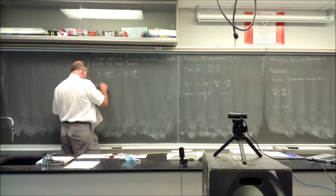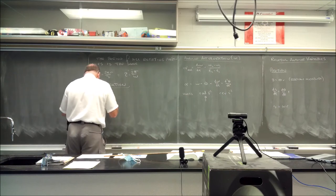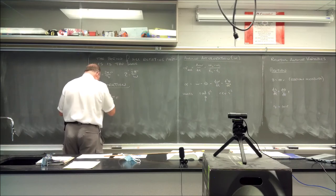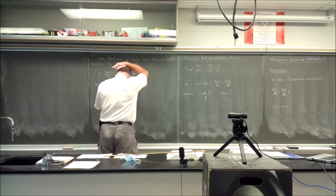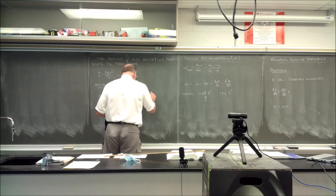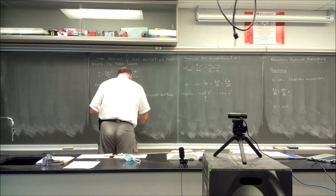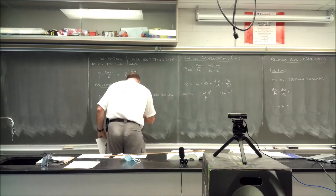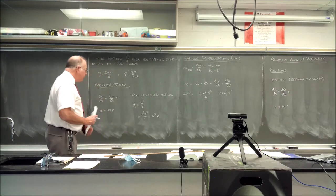For acceleration: dv/dt = (dω/dt)r, so a = αr. For circular motion, centripetal acceleration a_c = v²/r; substituting v = ωr gives a_c = ω²r²/r = ω²r.